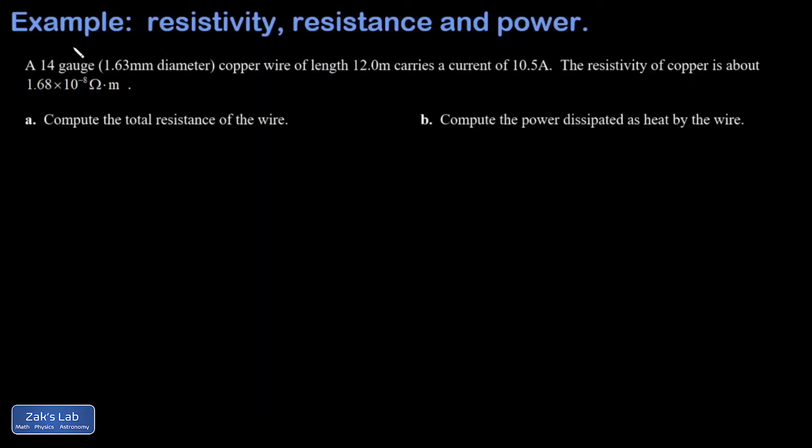In this video we're given a 14 gauge wire and we want the diameter in metric units, so 1.63 millimeters. The length is 12 meters, it's carrying 10 and a half amps of current, and it's a copper wire. We're told that the resistivity of copper is 1.68 times 10 to the negative eighth ohm meters. In part a we want the total resistance of the wire.